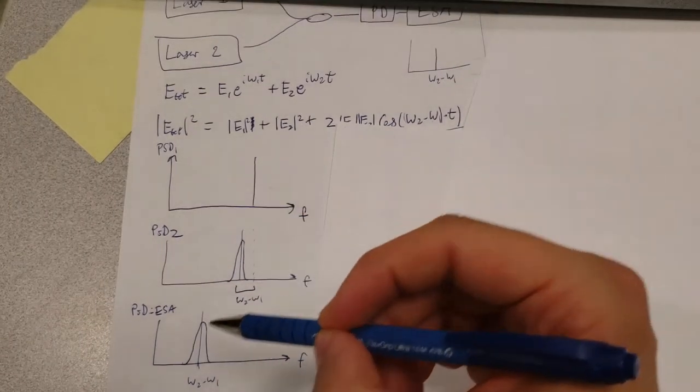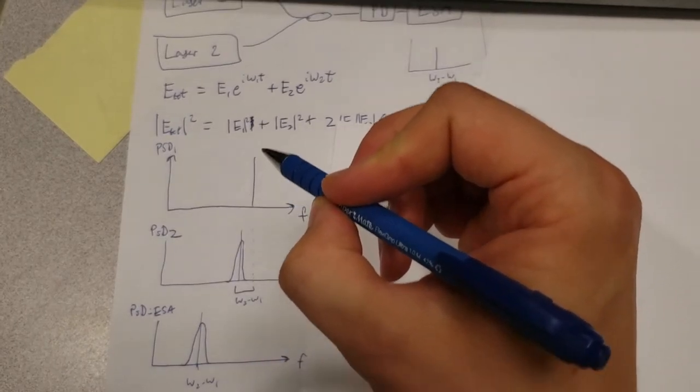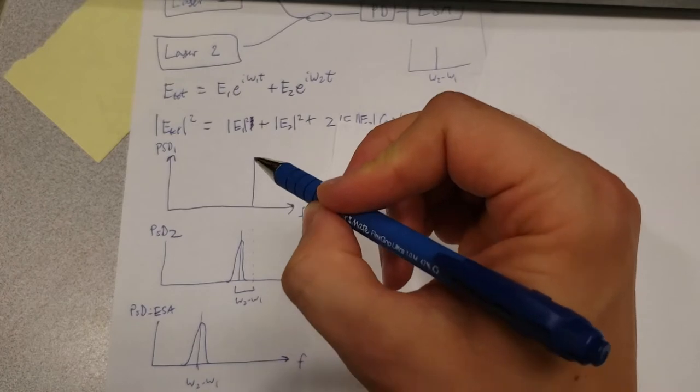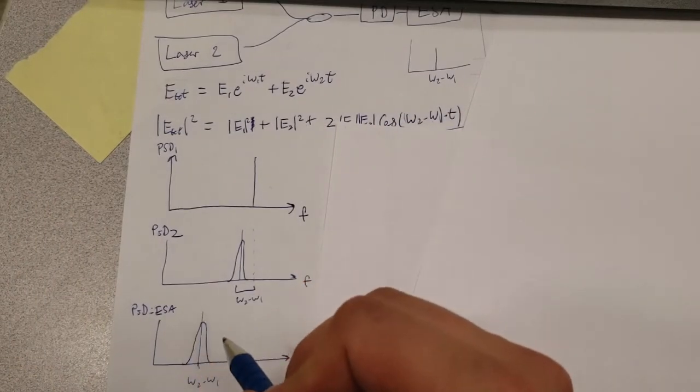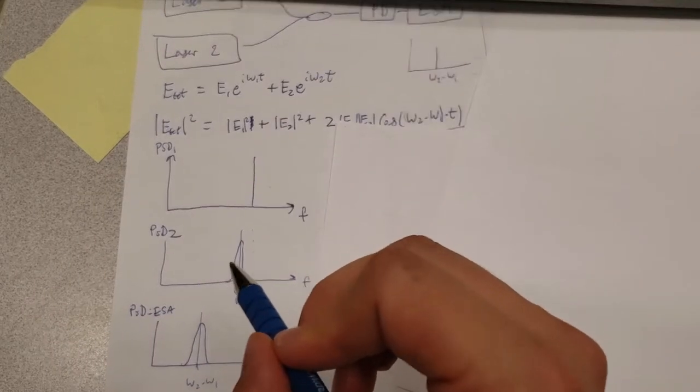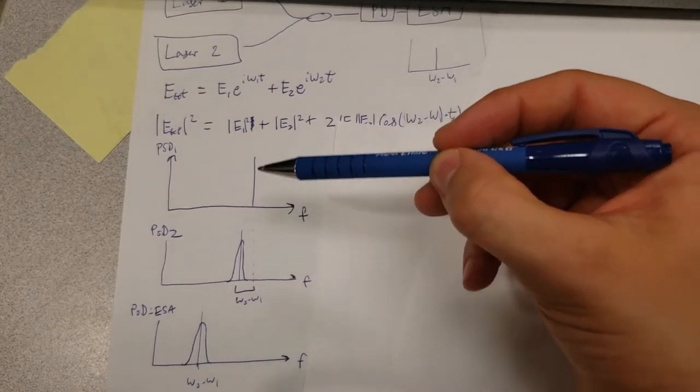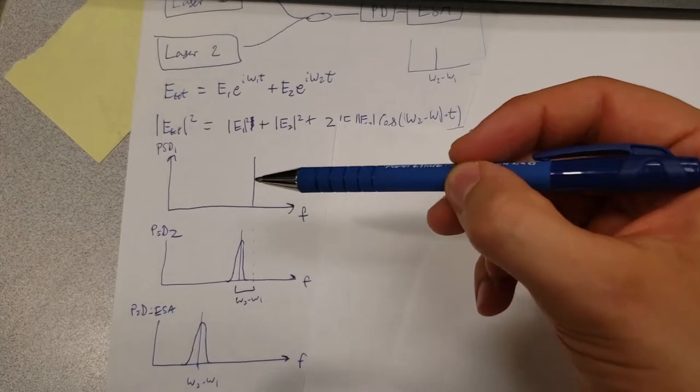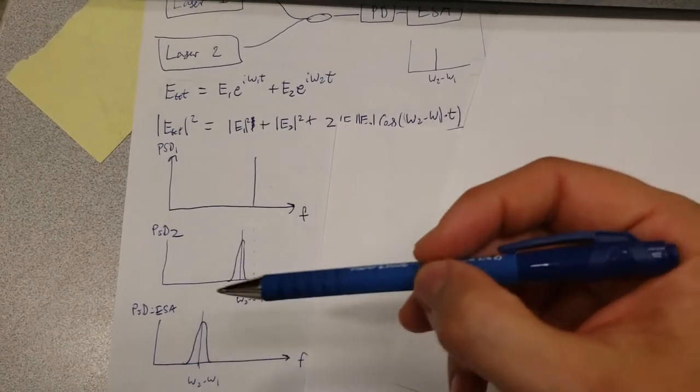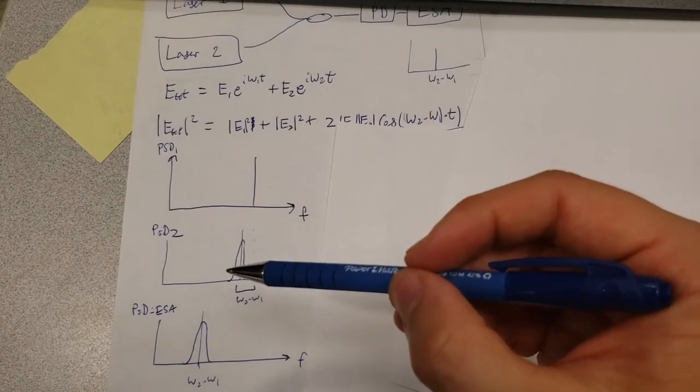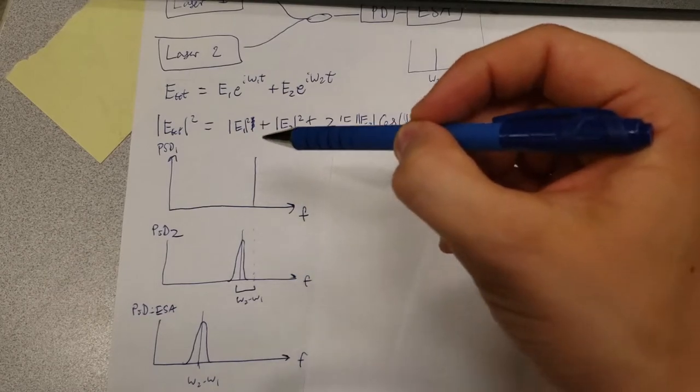This is a way to measure the line width of the second laser with a high degree of confidence. We interfere these two lasers on the photodiode and measure the width on the electrical spectrum analyzer to determine the stability of the second laser. But the issue is that we need to ensure laser 1 has a line width much much smaller than laser 2. That runs into a chicken and egg problem: if we need this laser to determine that this laser is very stable, how do we determine that this laser is stable in the first place?